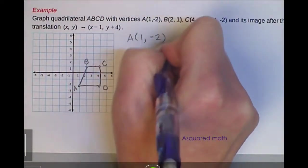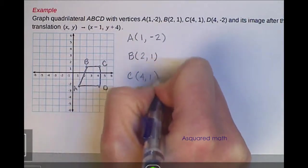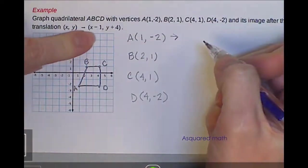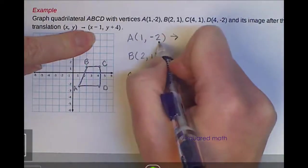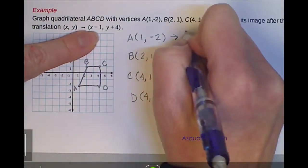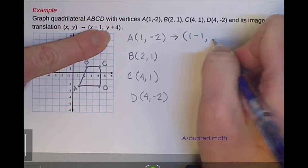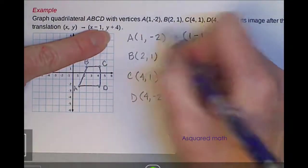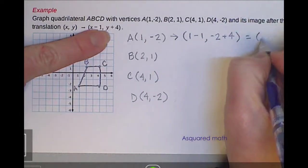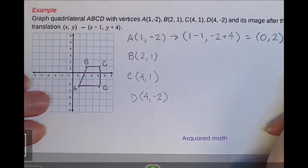I've got A is (1,-2). B is (2,1). C is (4,1). And then D is (4,-2). If I apply this rule to this given (x,y) coordinate point, our new coordinate point to go with our prime is going to be our x coordinate, which is 1, and subtract 1. And then our new y coordinate for the prime says take your original y value, which is -2, and add 4 to it. From there, 1-1 is 0. -2+4 gives us 2. So this is the coordinate point for A prime.